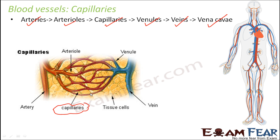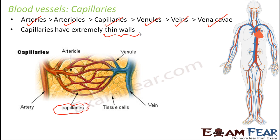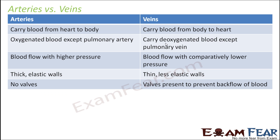Capillaries are the blood vessels where exchange of gases, nutrients, and excretory products all take place, because they have very thin walls. This makes exchange of substances very easy — whether it is exchange of gases, food products, or waste materials.